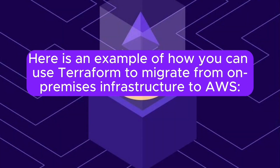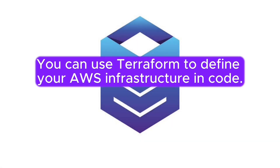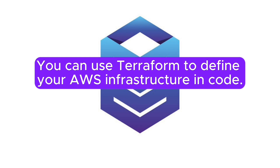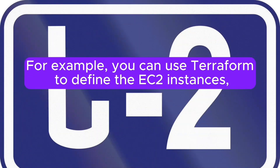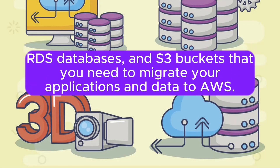Here is an example of how you can use Terraform to migrate from on-premises infrastructure to AWS. You can use Terraform to define your AWS infrastructure in code — for example, defining the EC2 instances, RDS databases, and S3 buckets that you need to migrate your applications and data to AWS.